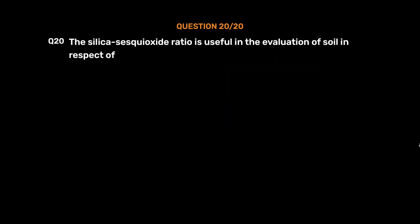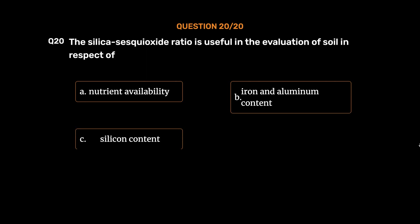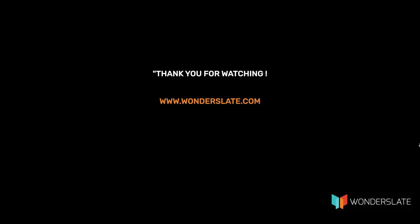Question number 20. The silica sesquioxide ratio is useful in the evaluation of soil in respect of: option A, Nutrient availability; option B, Iron and aluminum content; option C, Silicon content; option D, None of the above. The correct answer is option B, Iron and aluminum content.